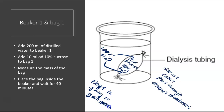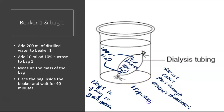If you're actually doing this in lab, you take the bag, fill it with the solution, weigh it, put it into the beaker, let it sit for 40 minutes, and weigh it again — and it very obviously gains mass. We say that this bag was placed in a hypotonic solution, which means the solution on the outside has less solutes than what's inside the bag. The solute here is sucrose.